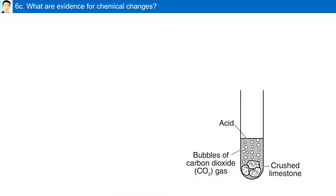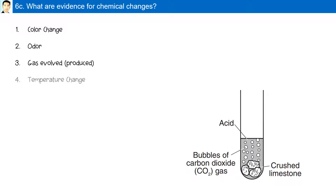What are evidence for chemical changes? Color, odor, gas produced, temperature change, or a precipitate forms — where two liquids are mixed and a solid is formed. The solid is known as a precipitate.